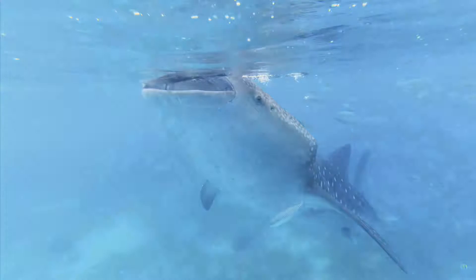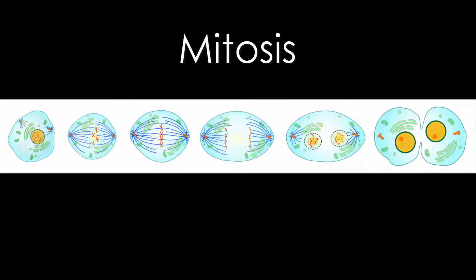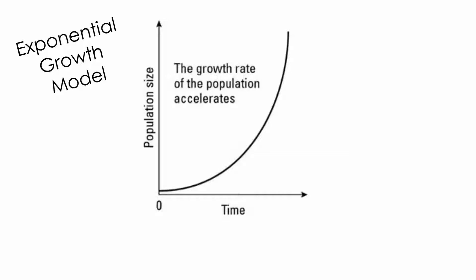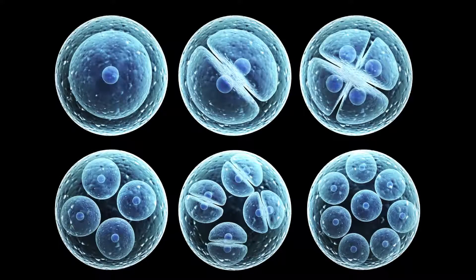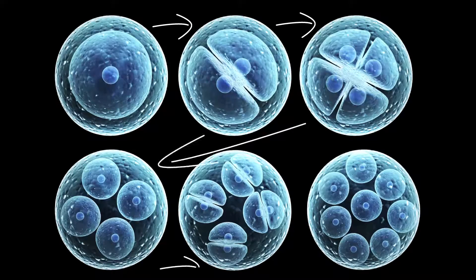Phytoplankton do not undergo sexual reproduction, but rather go through mitosis or fission — that's where cells split, producing two daughter cells. The first organism splits into two daughter organisms, who then each split to form four, who split to form eight, and so on.